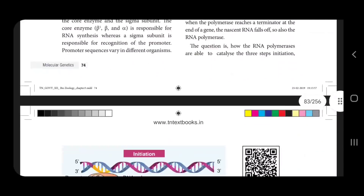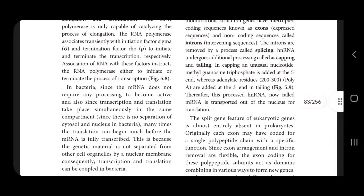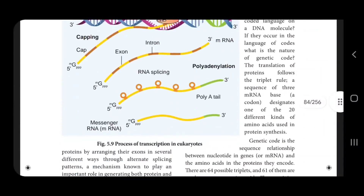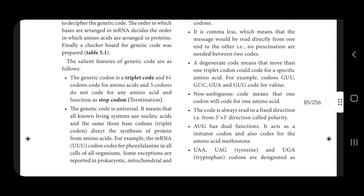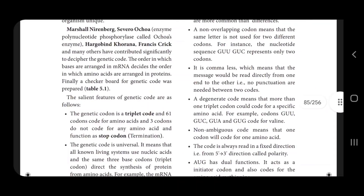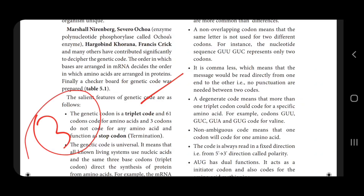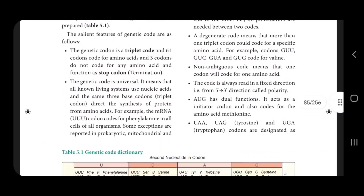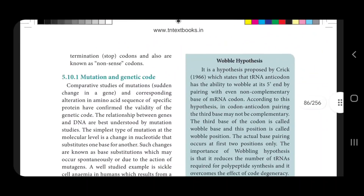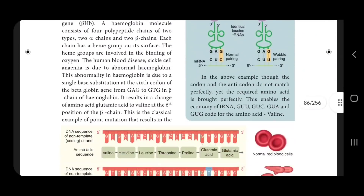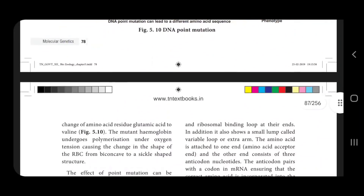Next, what is important? Salient features of genetic code — this is a 3 mark question. The mutation of genetic code is used.